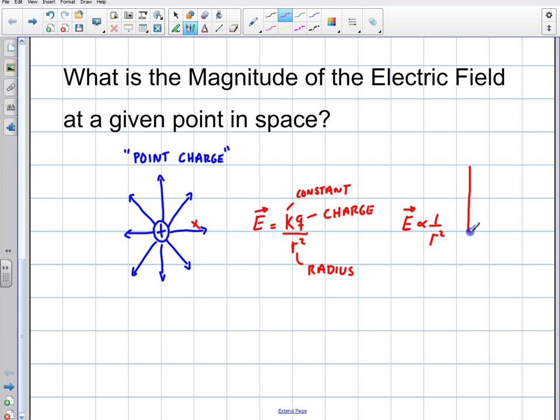So if I had a graph here and I had E versus R, basically what's going to happen is as I get closer and closer to that charge, as the radius approaches zero, the field is going to spike up. So it's important to understand that the field is changing depending upon how far away you are.